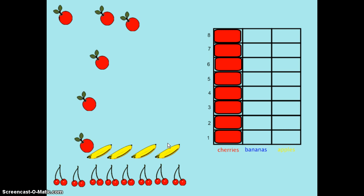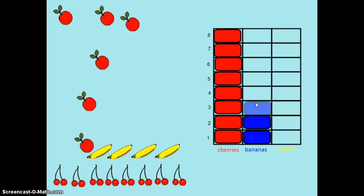When I color my bar graph, since four students voted for bananas, I'll color in four boxes. One, two, three, four.